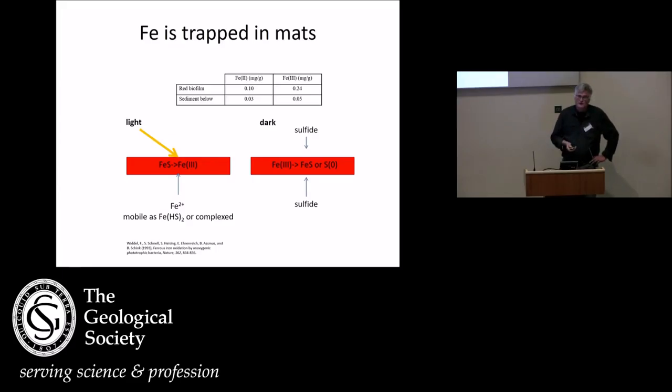And I think that this iron is oxidized by anoxygenic photosynthesis, partially. Or it is precipitated by chemical oxidation, by oxygen that is produced by the cyanobacteria. Whatever the mechanism is, iron-3 is accumulating and trapped in the photic zone of microbial mats.